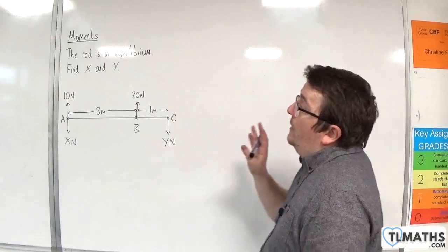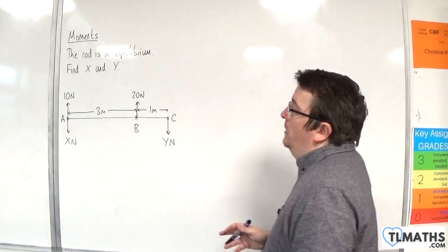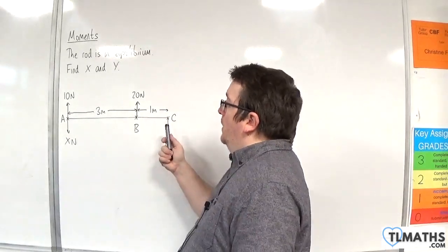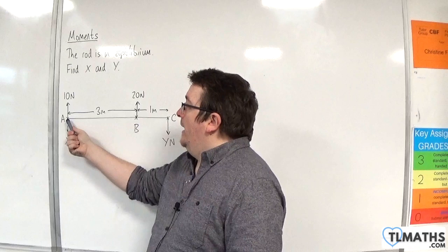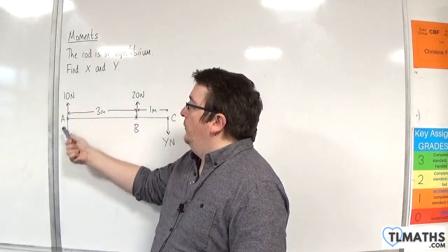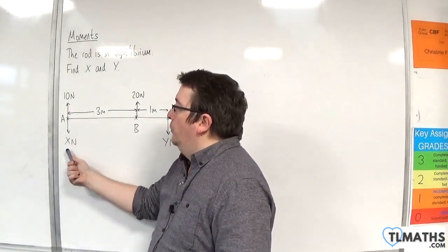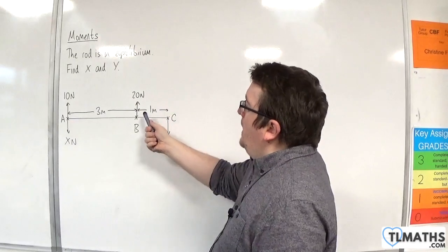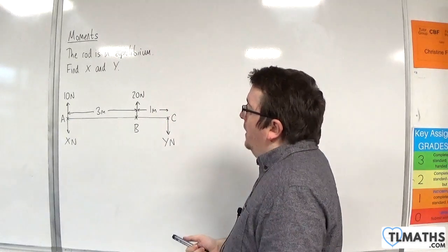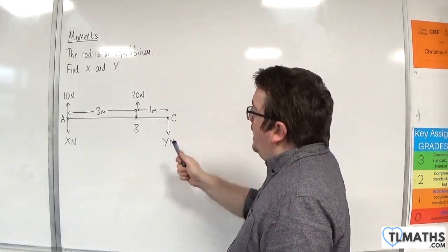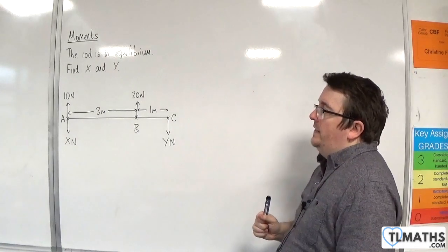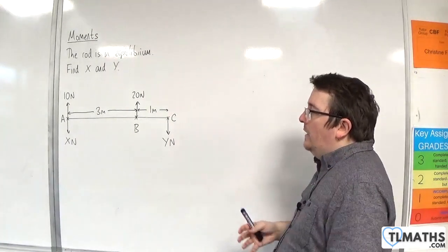In this video we have a rod in equilibrium. It's 4 meters long. At point A, we have a 10 Newton force working upwards and an X Newton force working downwards. At B we have a 20 Newton force acting upwards, and at C we have a Y Newton force acting downwards. We need to find X and Y.